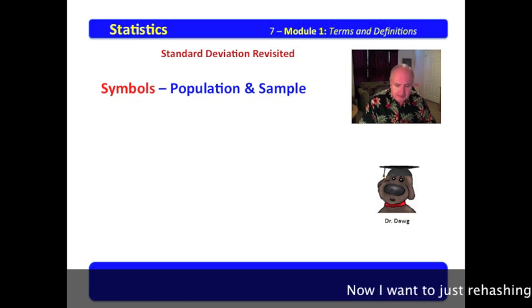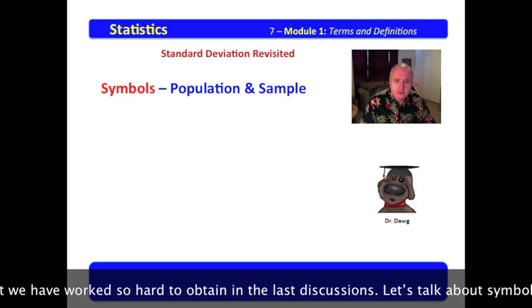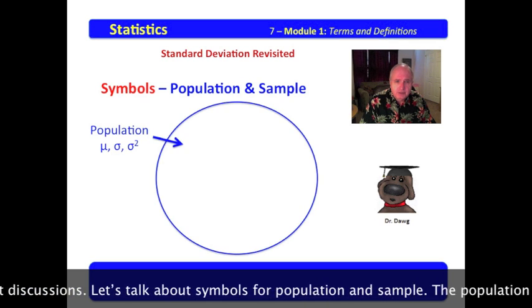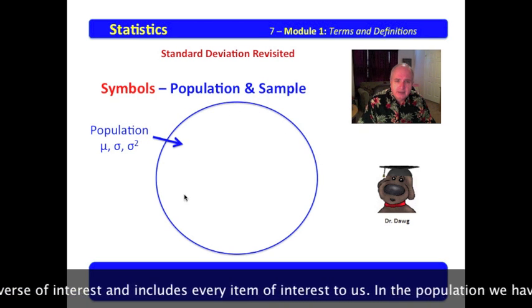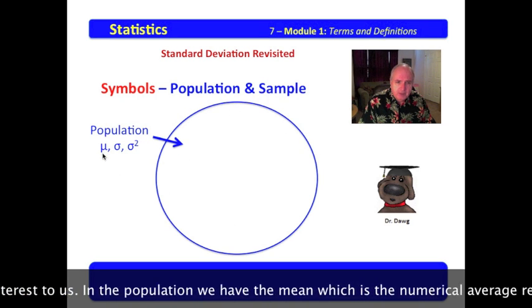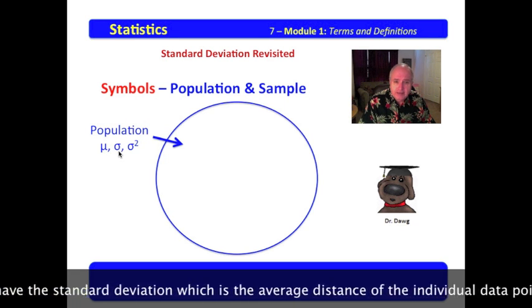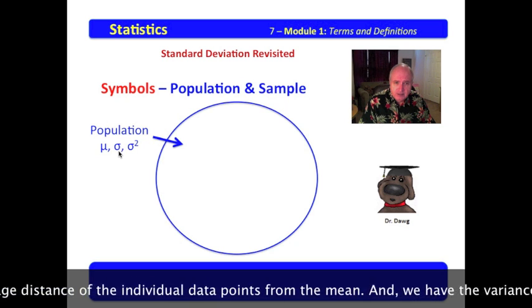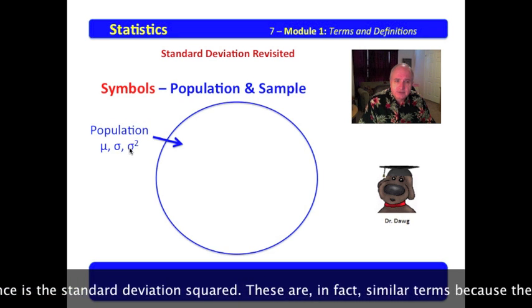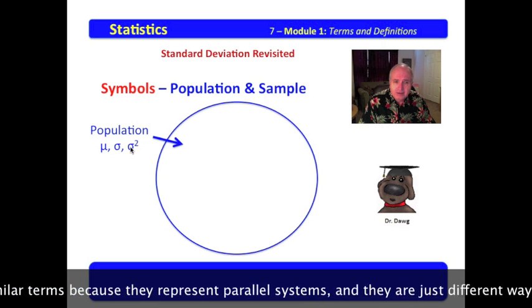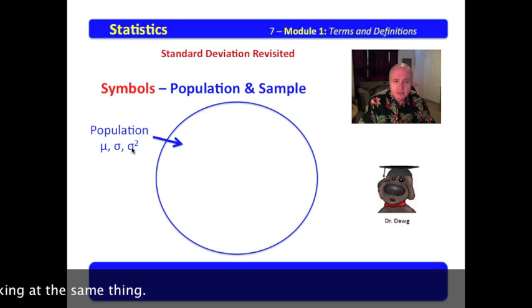Now, I want to just rehash a couple of things that we have worked so hard to obtain in the last discussions. Let's talk about symbols for population and sample. The population is a universe of interest. It includes every item of interest to us. In the population, we have the mean, which is the numerical average represented by mu. We have the standard deviation, which is the average distance of the individual datum points from the mean. And then we have the variance. The variance is the standard deviation squared. These are, in fact, similar terms because they represent parallel systems, and they are just different ways of looking at the same thing.